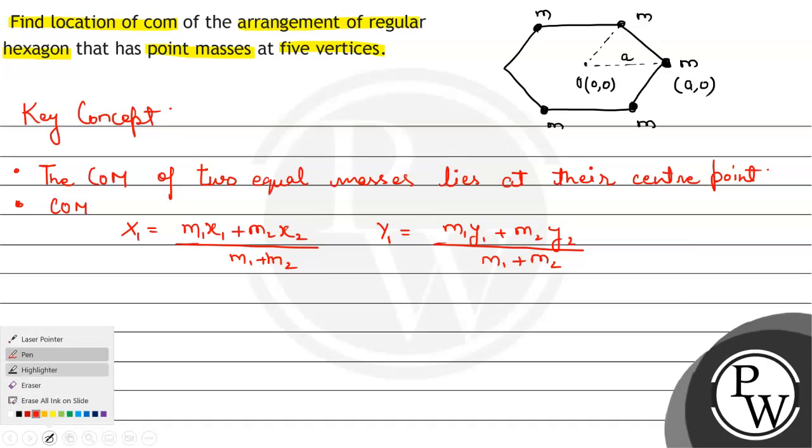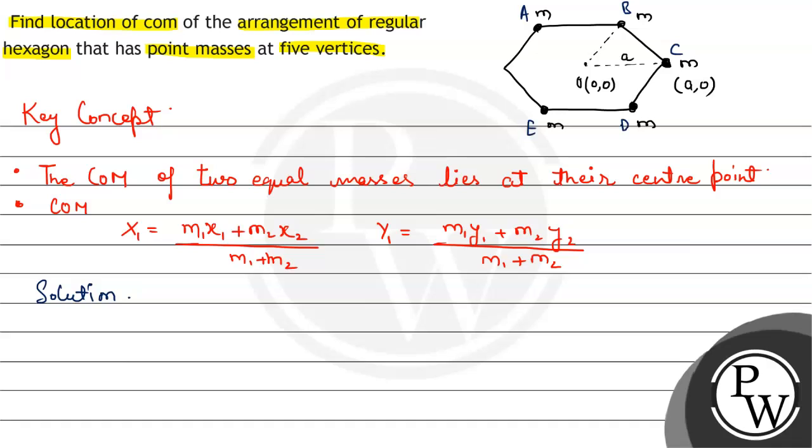Now let us solve our question. First we check the figure more carefully. If we name these point masses as A, B, C, D, and E, then point B and E are at equal distance a. Hence their center of mass will come at their center which is point O.